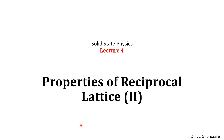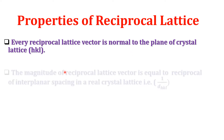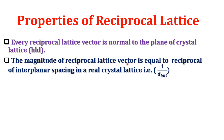We continue with the next point: properties of reciprocal lattice, part two. The first property is that every reciprocal lattice vector d* hkl is normal to the plane of the crystal lattice — that is, d* hkl dot any vector in the plane must vanish. The second property is that the magnitude of the reciprocal lattice vector d* hkl is equal to the reciprocal of the interplanar spacing, that is, |d* hkl| = 1/d_hkl.